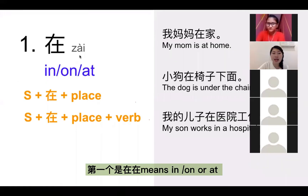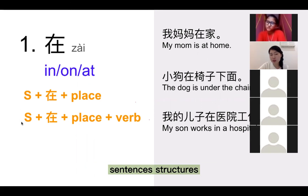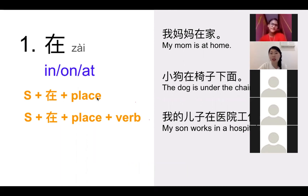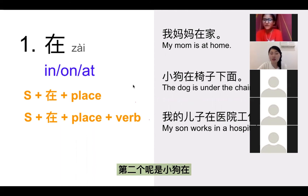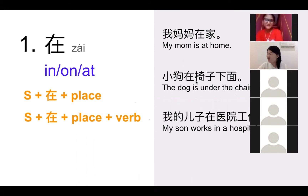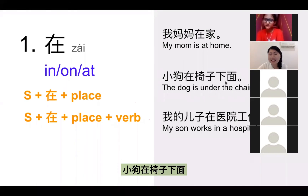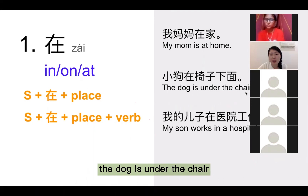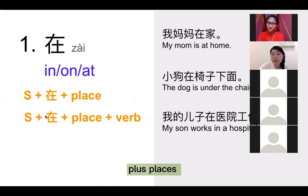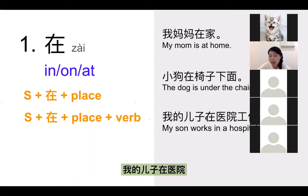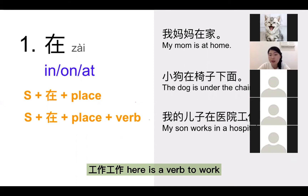他是医生。第一个是「在」,在 means in, on or at. Normally we have two sentence structures: like someone or something plus 在 plus the place — like 我妈妈在家,my mom is at home. 第二个是 someone or something plus 在 plus place plus a verb — like 我的儿子在医院工作,here 工作 is a verb, to work.